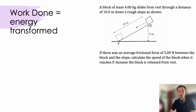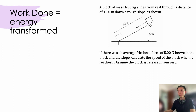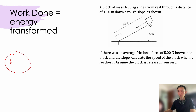This question gives us a block sliding down 10 meters of a rough slope. When the question says rough slope, this means friction is involved — a frictional force of 5 newtons between the block and the slope. We are supposed to calculate the speed of the block when it reaches point P. We need to think about the flow of energy first, so let's construct a diagram. The block starts at a high point and ends at a low point.